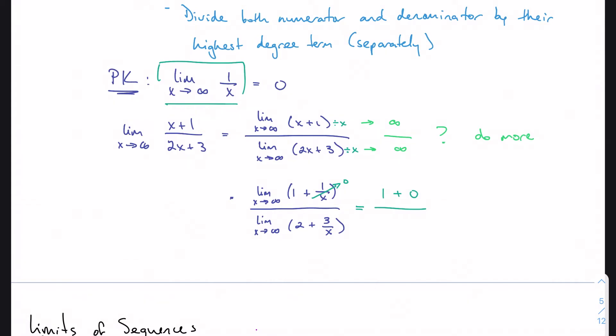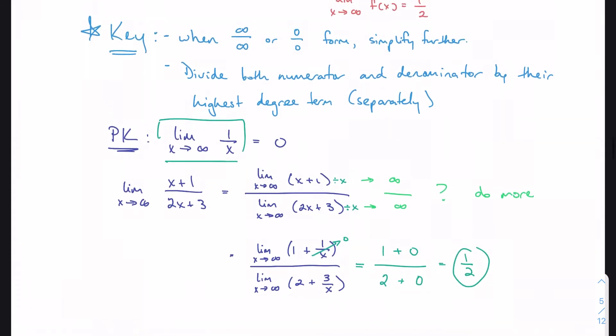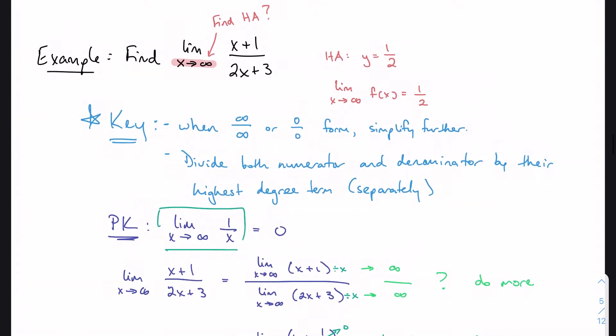And the denominator, again, same idea. 2 is 2, no matter what happens, 2 is just always 2. And then with 3/x, it works like 1/x. As x gets bigger and bigger and bigger, 3/x is going to get progressively smaller. We get to 0. We simplify and we get 1/2, which is what we said we would get from our horizontal asymptote rules.